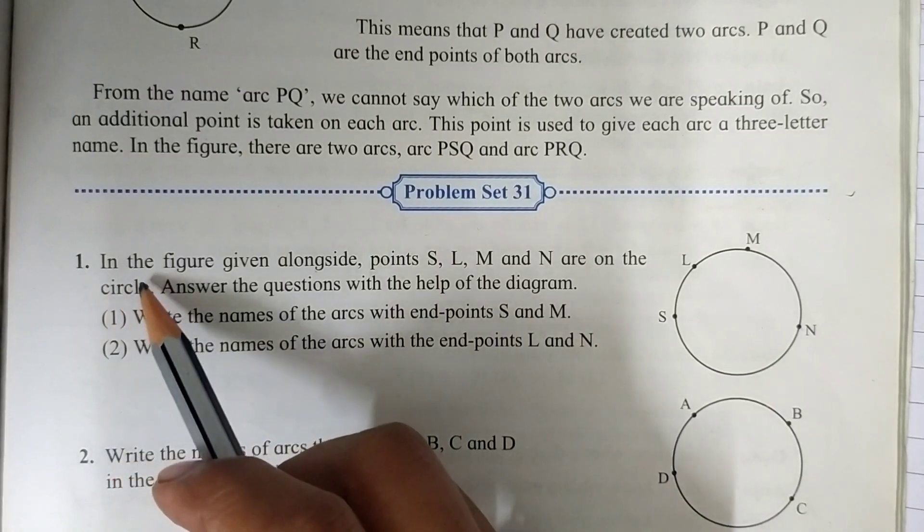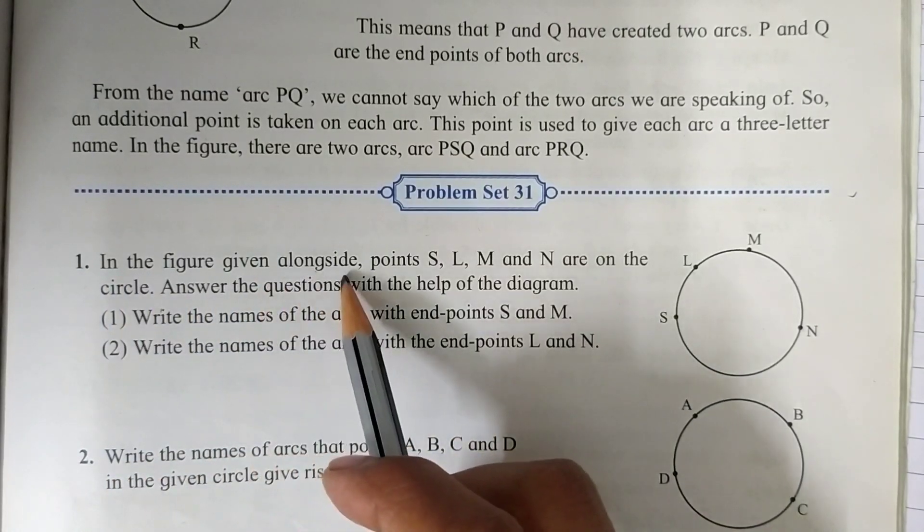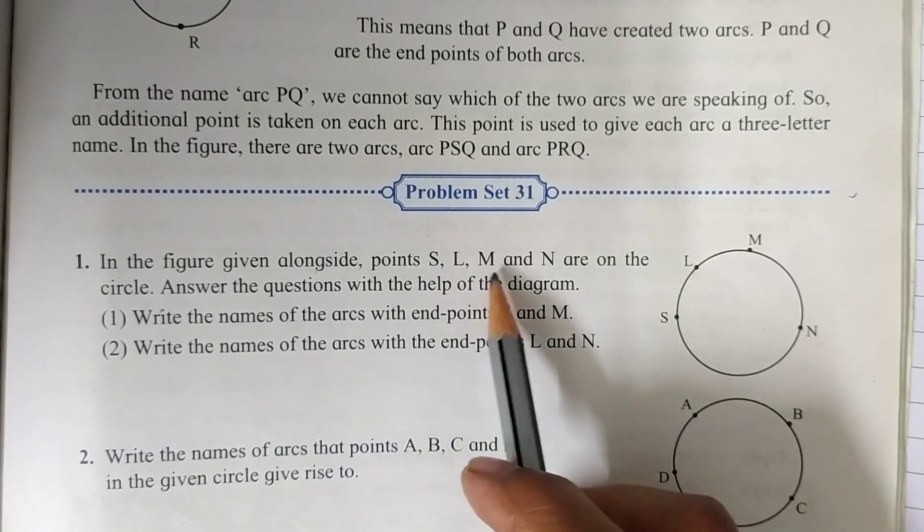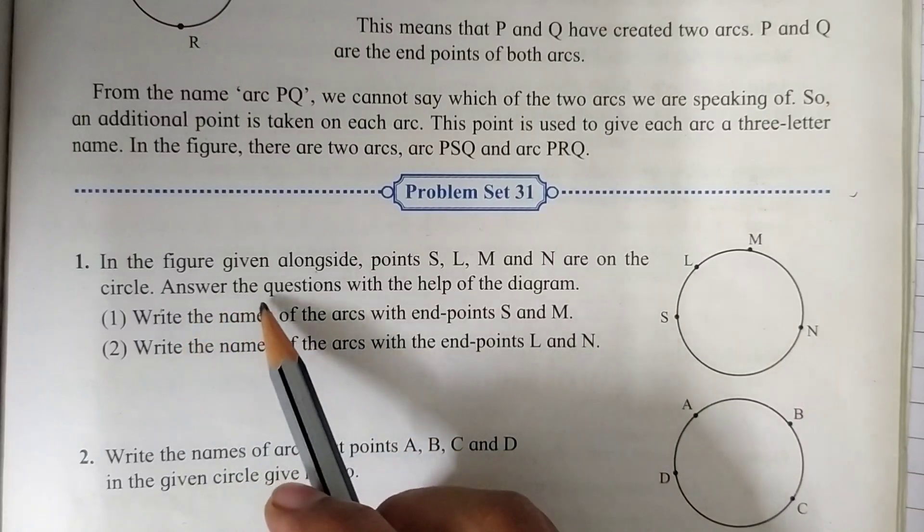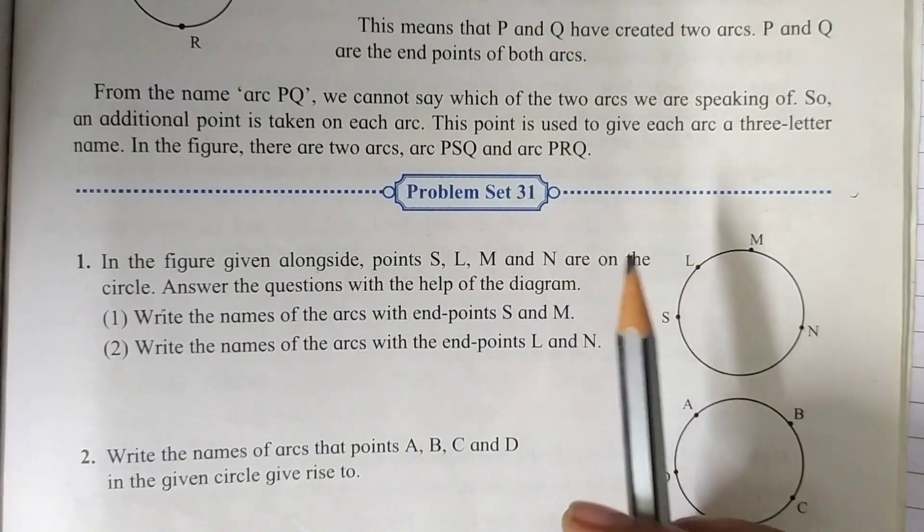Question number one is: In the figure given alongside, points S, L, M and N are on the circle. Answer the questions with the help of the diagram.